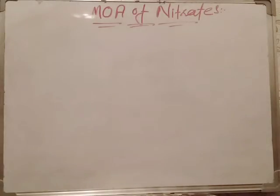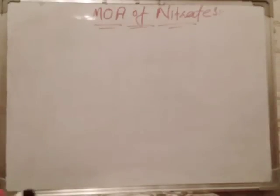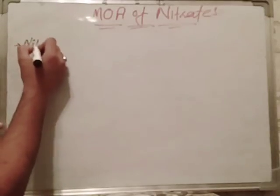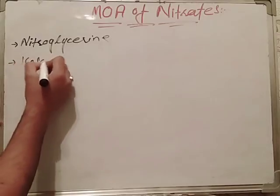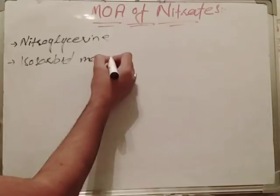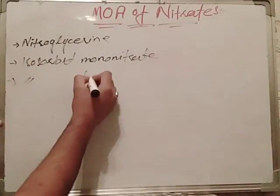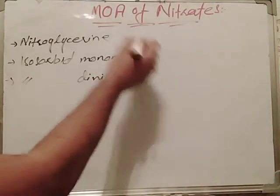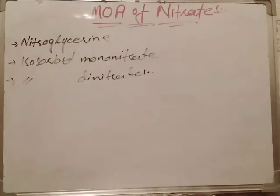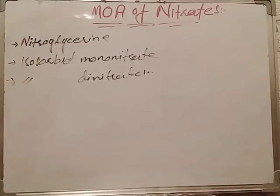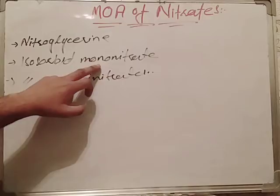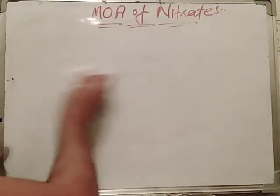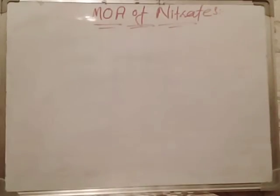The nitrate group has different drugs: nitroglycerine, used mainly sublingually, isosorbide mononitrate, and isosorbide dinitrate. There are also tetranitrate class drugs used as vasodilators. If someone asks which drug is the metabolite of another drug but is still available in the market as a vasodilator, the answer is isosorbide mononitrate, because it is the metabolite of isosorbide dinitrate.